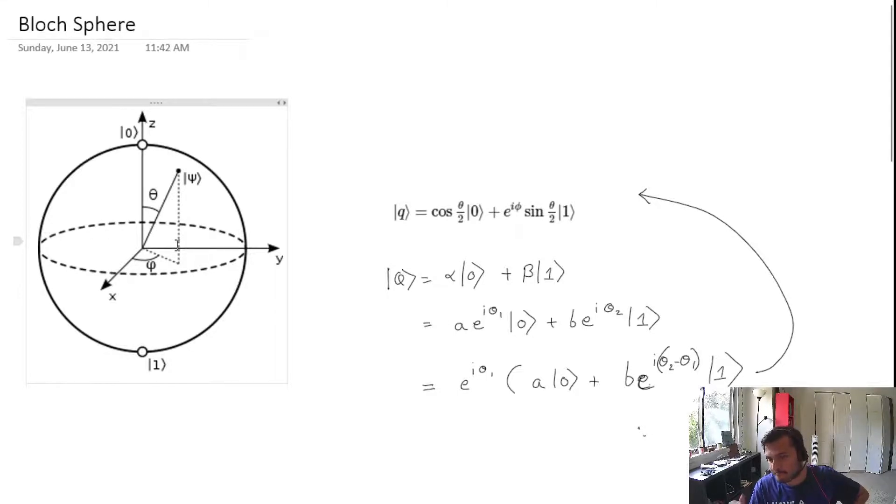Phi is the xy plane, so phi goes around zero to 360. It can do a whole revolution while theta goes from zero to pi. For example, what is state zero? Just state zero would be where this coefficient is one and this one is zero.